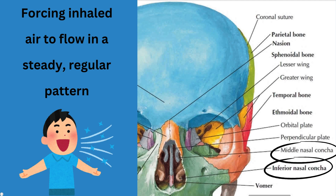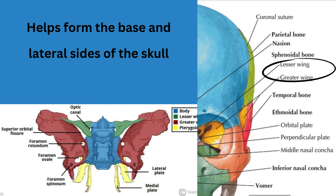Next are the lesser wing and greater wing of the sphenoidal bone, which help form the base and lateral sides of the skull. They are called the lesser wing and greater wing because, as you can see in the picture, the green part is the lesser wing as it is small, whereas the red part is the greater wing because it is big.